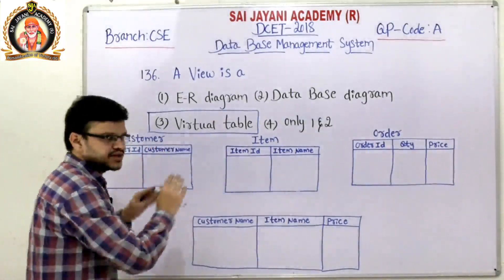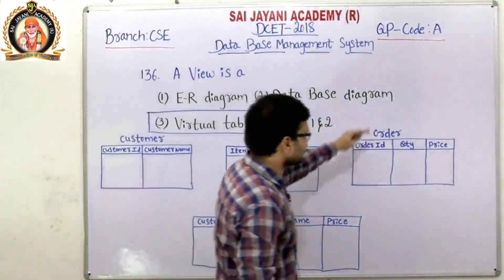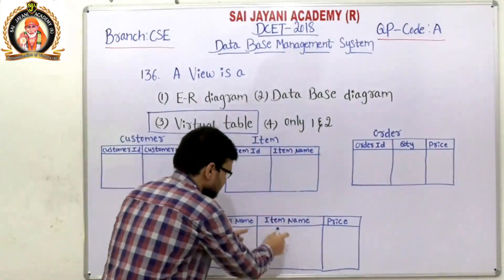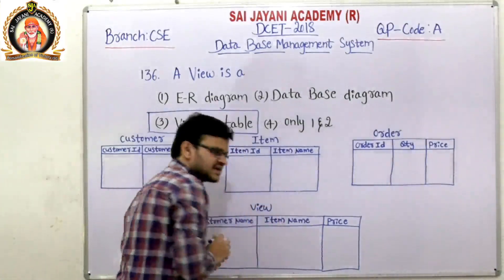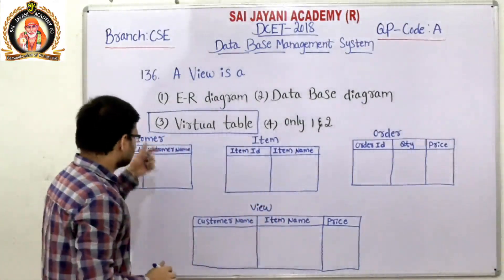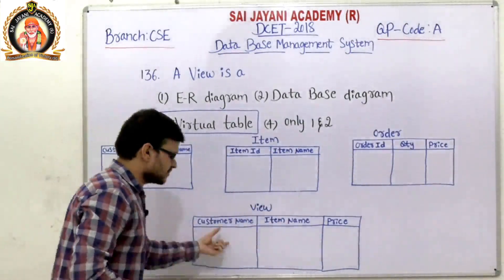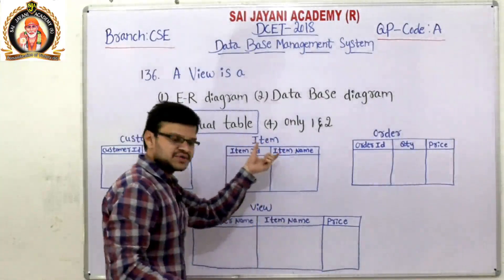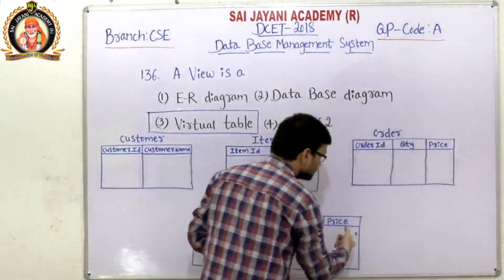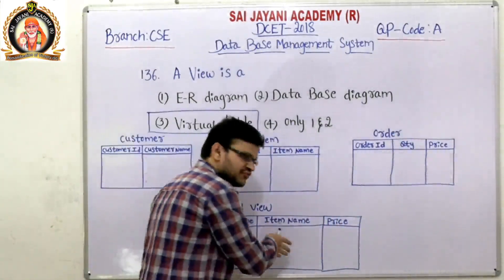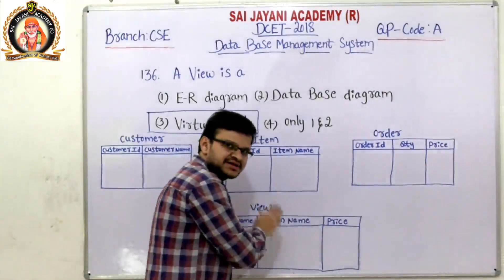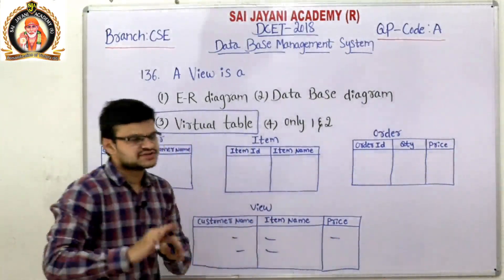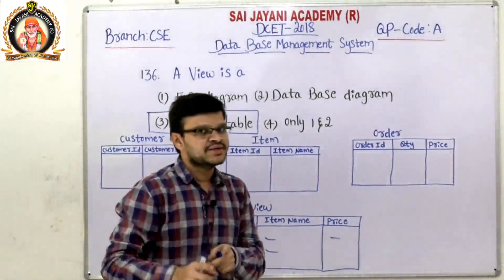For example, using three tables — a customer table, an item table, and an order table — a view is created. A customer name is taken from the customer table, the item name is taken from the item table, and the price is taken from the order table. The data inside the view is not physically stored; it remains in the base table only.